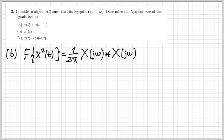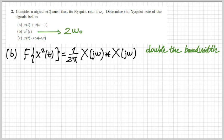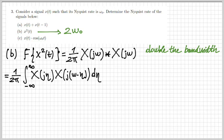Moving on to part b, we're given x²(t). We know that multiplication in the time domain corresponds to convolution in the frequency domain, so the Fourier transform is (1/2π) X(jω) convolved with itself. Doing that basically doubles the bandwidth, and therefore the Nyquist rate of the signal is double — 2ω₀. Let's verify this.